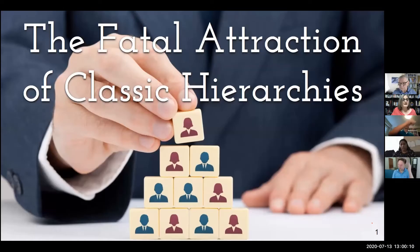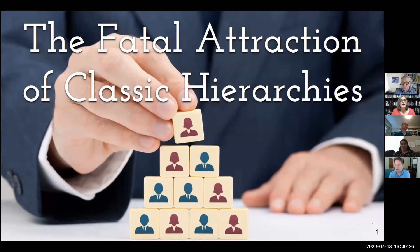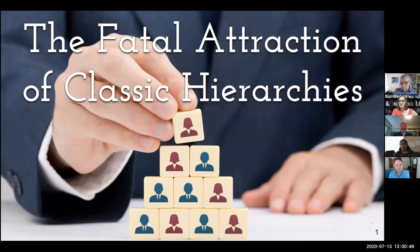Welcome back everybody. We're excited to get into the next session. This is the Best Agile Articles of 2018 conference, and we have conference speakers who had articles represented in our book, The 2018 Year. We have with us today Kurt Nielsen, and he's going to be talking about the topic, the fatal attraction of classic hierarchies. You are all on mute, but you can unmute yourself if you'd like to ask a question, and we also have the chat box going, so feel free to drop any comments or questions as we go along.